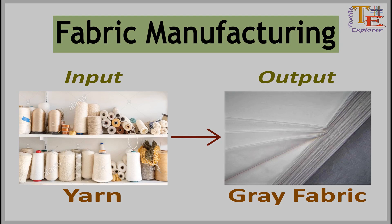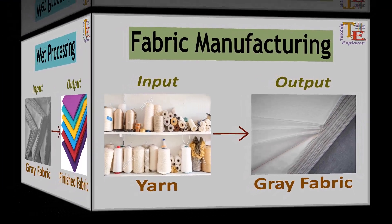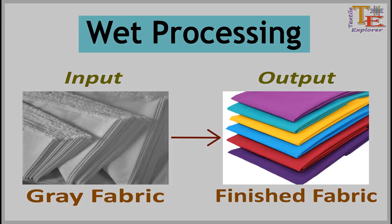Fabric manufacturing is a process which converts yarn into fabric by weaving, knitting, and non-woven methods. Those operations are done in weaving or knitting industries, and gray fabric is the output of this process.